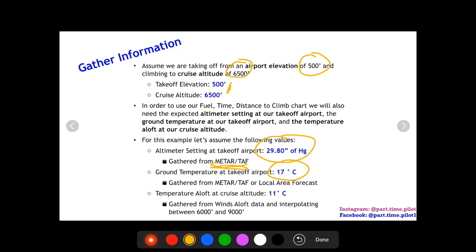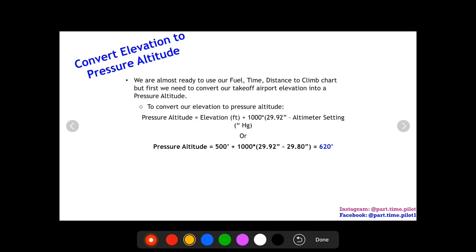You can go to aviationweather.org and use their graphical area forecast tool. Then the temperature aloft at our cruise altitude, we're going to assume 11 degrees Celsius. Now this is going to be gathered from your winds aloft data. So at 6500 feet cruise altitude, that's going to fall between the 6000 and 9000 feet, so just interpolate a little to get that value.